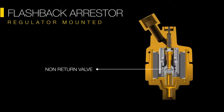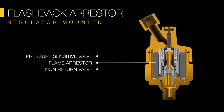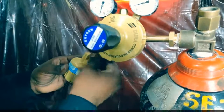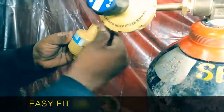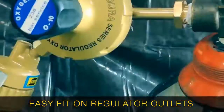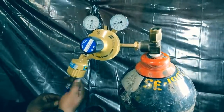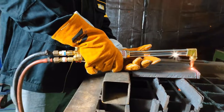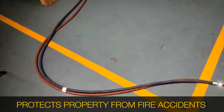Regulator mounted flashback arrestors provide three to four-level protection, incorporating a non-return valve, flame arrestor, pressure sensitive cut-off valve, and temperature sensitive cut-off valve. They fit easily into the regulator outlets with a range of connections suited for different gases and cylinder designs, protecting your property from catastrophic fire accidents and explosions that could occur through flashbacks.